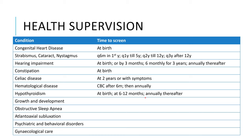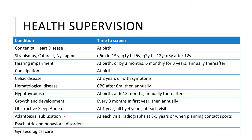Hypothyroidism is notorious in Down syndrome children — do thyroid function tests first at birth, then at 6–12 months, and then every year. Assess growth and development every three months in the first year and then annually. Important: do not use the standard WHO and IAP growth charts for Down syndrome children — use the separate growth charts available specifically for them. Screen for obstructive sleep apnea at one year, at least once by four years, and at each subsequent visit. Screen for atlantoaxial subluxation due to displacement of the C1 vertebra at each visit, and if the patient plans to participate in contact sports, do radiographs at three to five years.